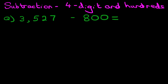Now the first stage is we're going to rewrite this question from the horizontal format into the vertical format. So let's do that over here. 3527 minus 800.